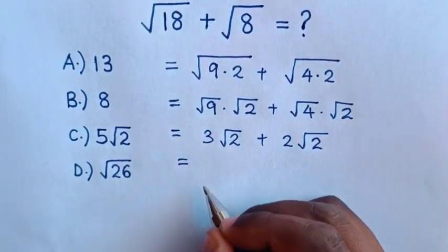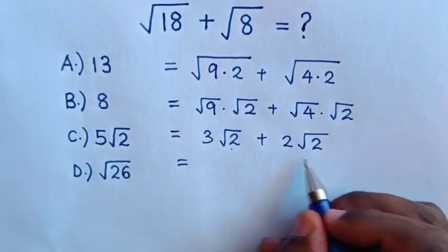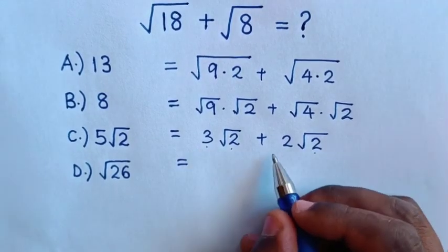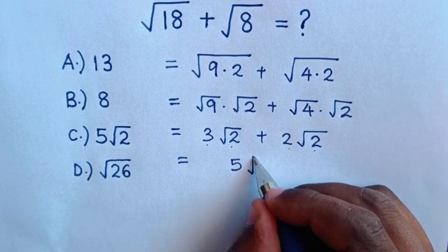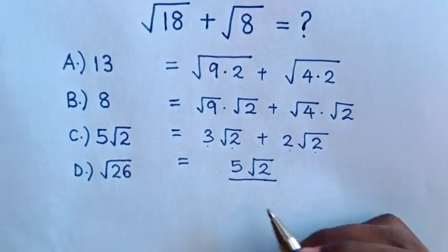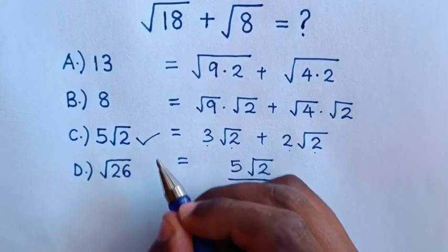This will be equal to, square root of 2 is common, so 3 plus 2 is 5 times square root of 2. So this is our final answer, 5 square root of 2, which is C.